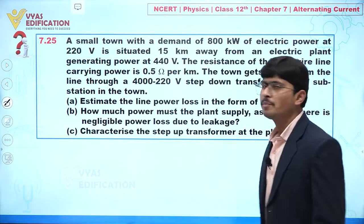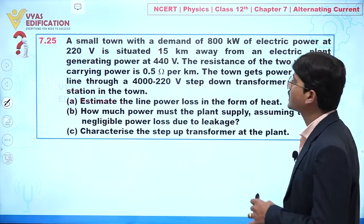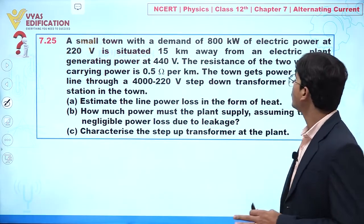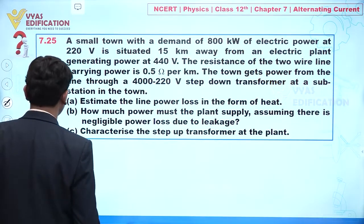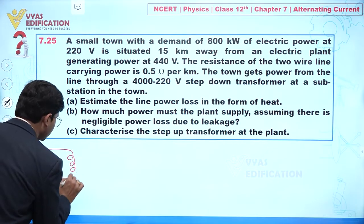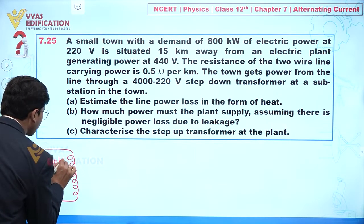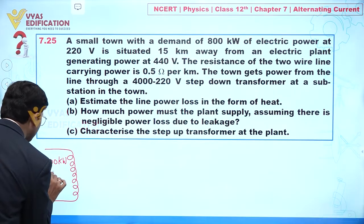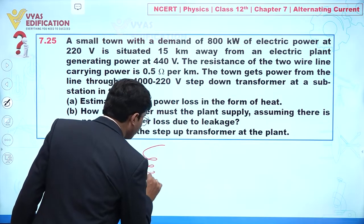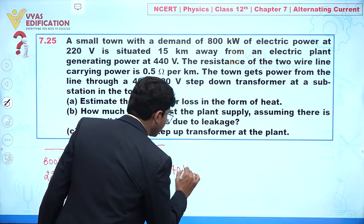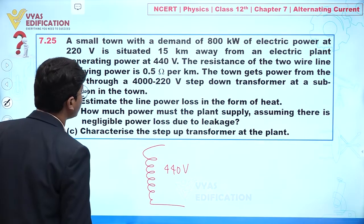We are going to discuss question number 7.25. In this question, a small town with a demand of 800 kilowatt of electric power at 220 volt is situated 15 kilometers away from an electric plant generating power at 440 volt. This is the output station and here we have the small town with a demand of 800 kilowatt at 220 volt.